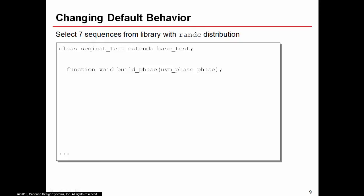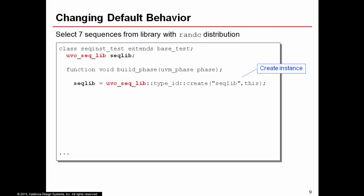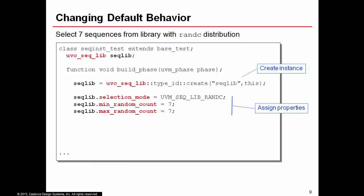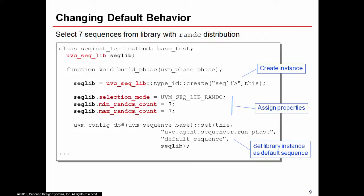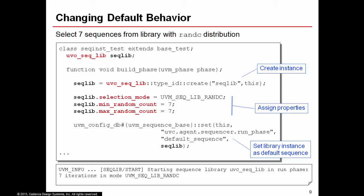To change the default behavior — for example, selecting only seven sequences using RAND_C mode — because we have an instance of the sequence library, we can directly write to its properties. Set selection_mode to RAND_C, set both min_random_count and max_random_count to 7, then set this instance as the default sequence of the sequencer. When executed, the random value will be 7 and the mode will be RAND_C.